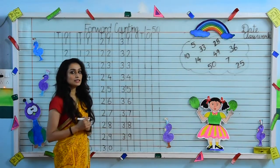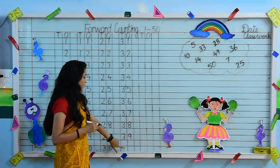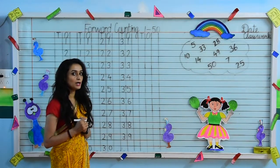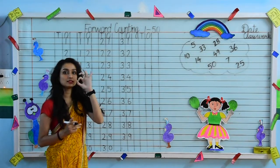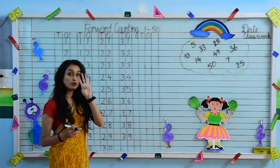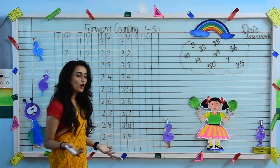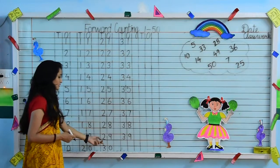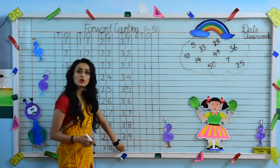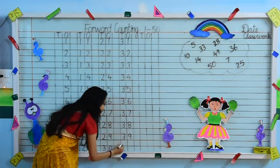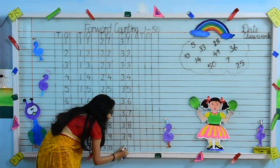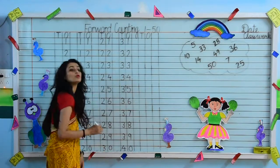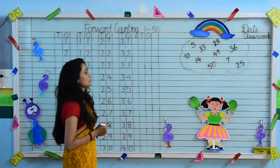Now tell me the last digit of this line. After 39, which number will come? 4, 0 — 40. 1, 0 — 10; 2, 0 — 20; 3, 0 — 30; now 4, 0 — 40.